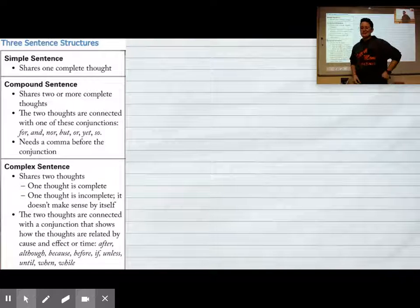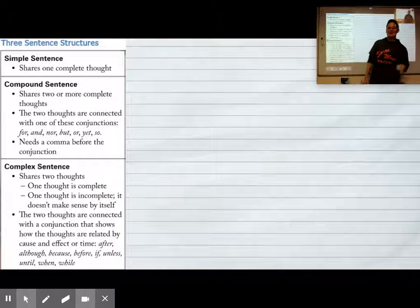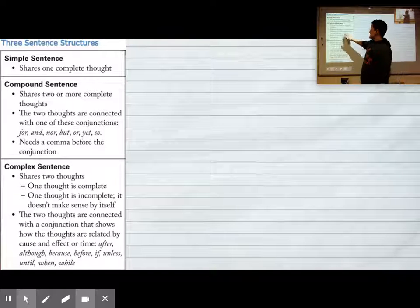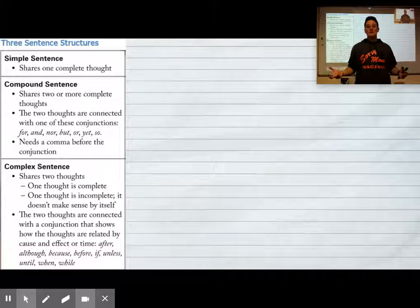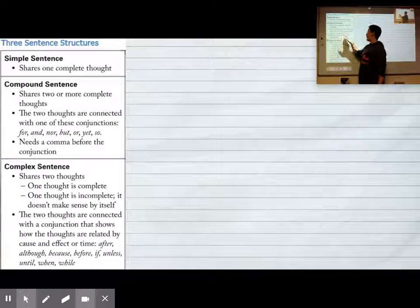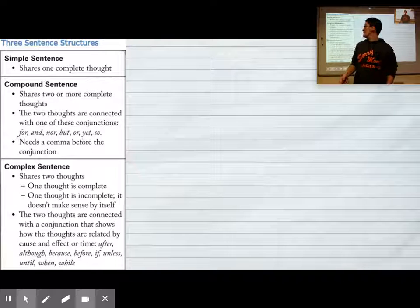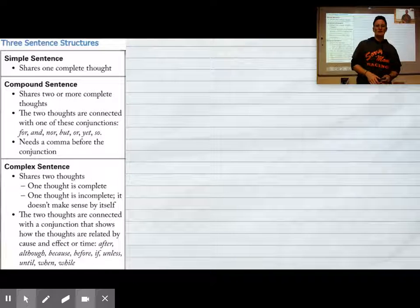That's two complete thoughts and they are connected with a conjunction. Conjunction junction, what's your function? That's like an old Schoolhouse Rock video. A conjunction is a word that we use to connect two complete thoughts in a sentence, so and, for, nor, but, or, yet, or so. Those are all conjunctions that you can use to connect two complete thoughts, and then you need a comma before that conjunction.